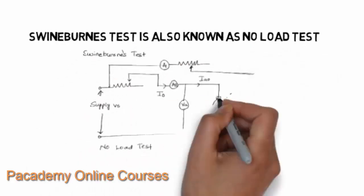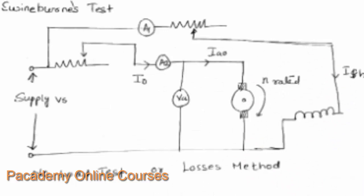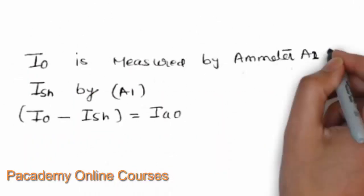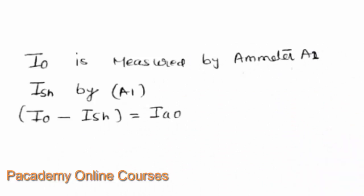This is the diagram for the Swinburne's test. Looking closely at the diagram, there is a supply voltage, an ammeter A1 which measures the field current, and a supply current to the armature, denoted as IA0 or I0. The machine is rotated at rated speed. Two ammeters measure the field current and the supply current to the armature, and a voltmeter measures the voltage across the armature, VA. So I0 is measured by one ammeter, and the field shunt current ISH is measured by ammeter A1.